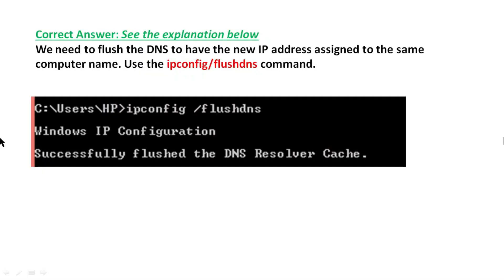The solution is to flush the DNS to update the new IP address assigned to the same computer name. Use the ipconfig /flushdns command in the command prompt. As you can see on screen, the DNS resolver cache has been successfully flushed. This is a DNS-related issue resolved by ipconfig /flushdns.